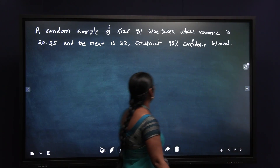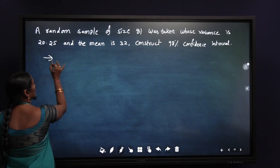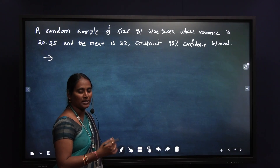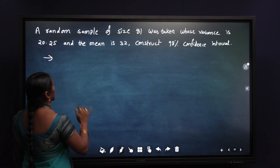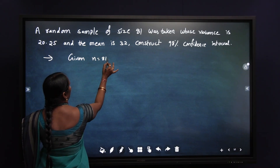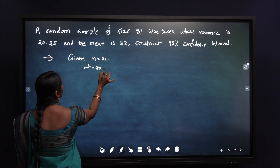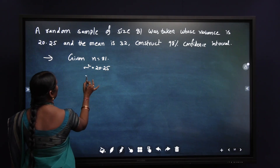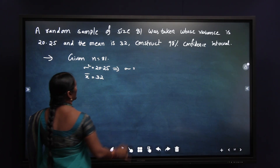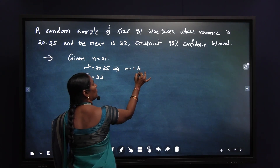Now let us see the given values. The sample size is denoted by n and the sample mean is denoted by x bar. Sample standard deviation is denoted by s. As per that notation, the given sample size n is equal to 81, whose variance sigma square is 20.25, and the sample mean x bar is 32. When the value of sigma square is 20.25, taking the standard deviation, the value of sigma is equal to 4.5.